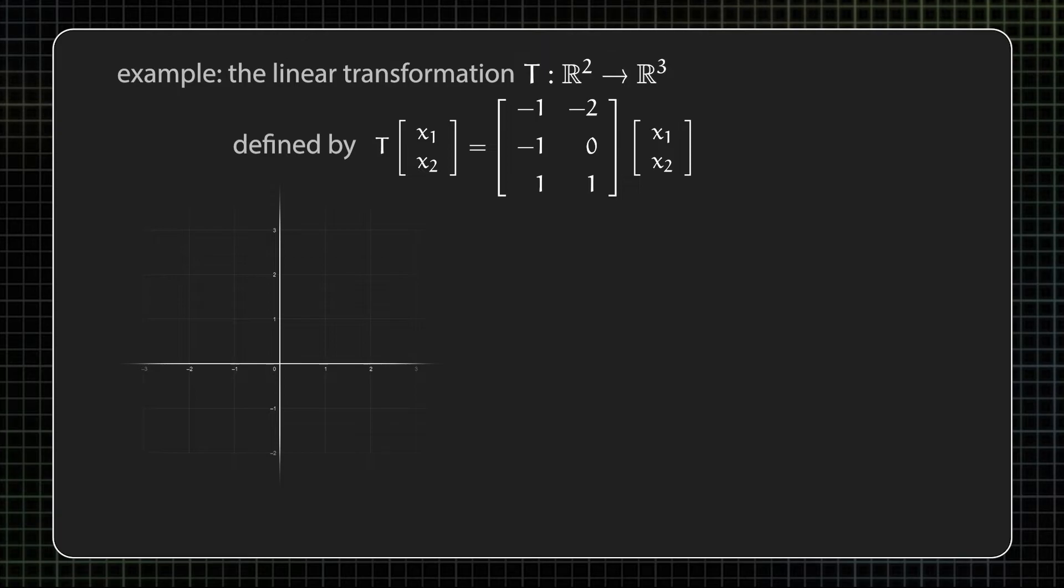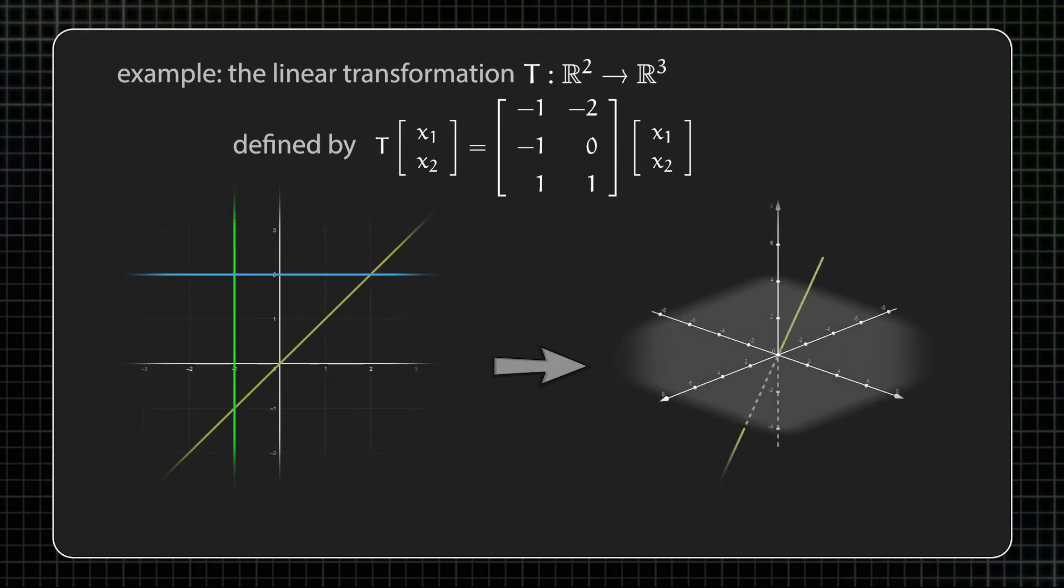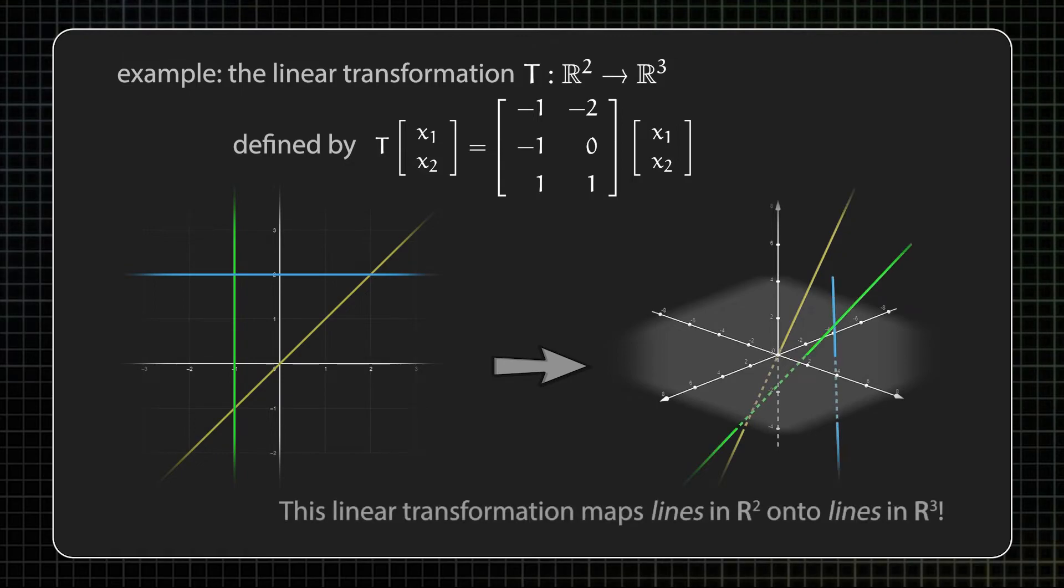Anyways, that's the main idea. We call all of these things linear because in some sense they carry lines in one space directly onto lines in another space in a pretty methodical way.